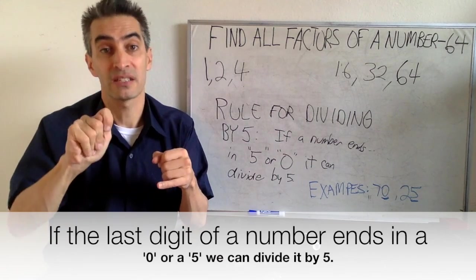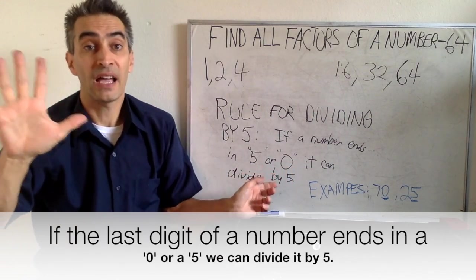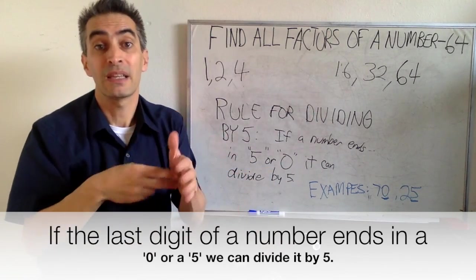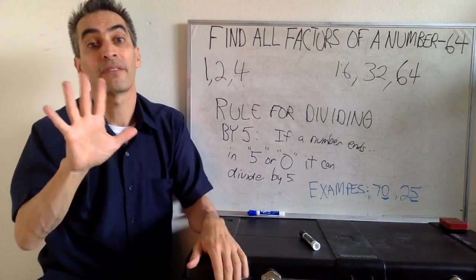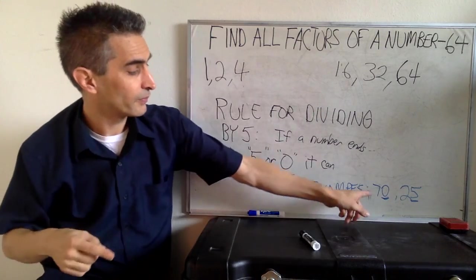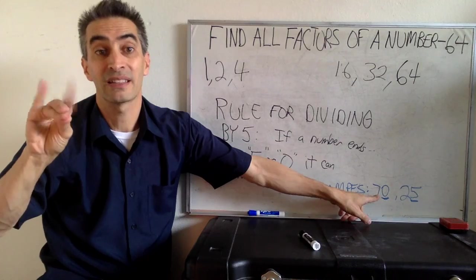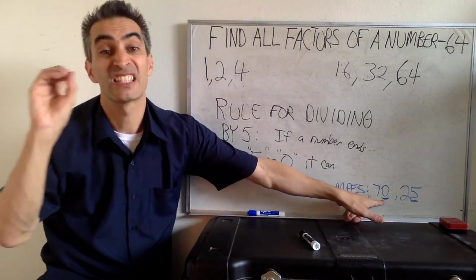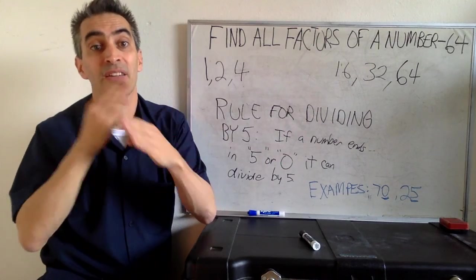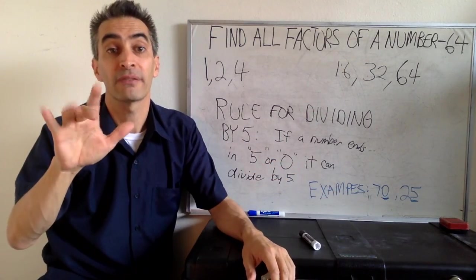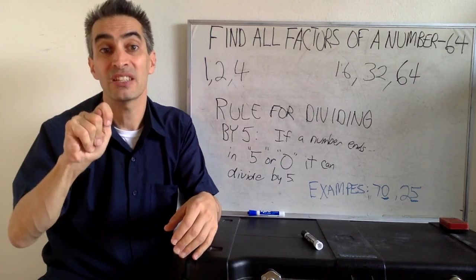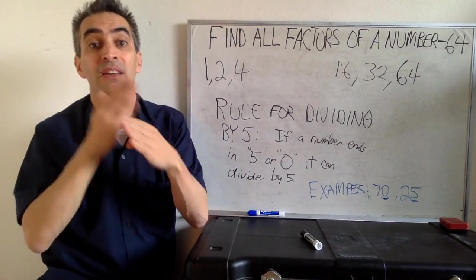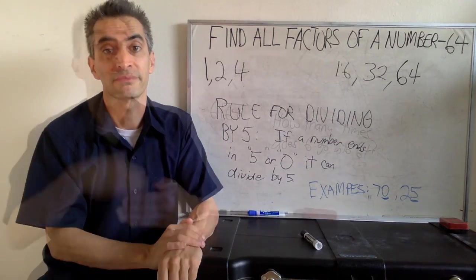Suppose the last digit of a number is 5 or 0. That means the number can be divisible by 5. For example, 70. The last digit is 0. That means you can divide that number by 5. 25. The last digit is 5. That means that number can also be divisible by 5.